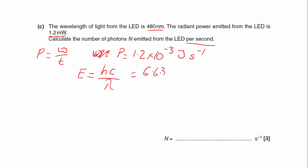So that's going to equal 6.63 times 10 to the minus 34 multiplied by 3 times 10 to the 8, and divide that by 480 times 10 to the minus 9. That gives me the energy of the photon.